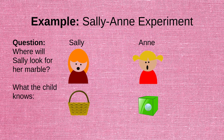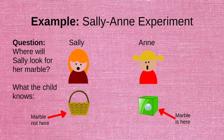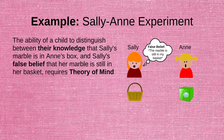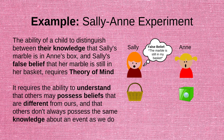Because the child saw the skit, they know that the marble is no longer in Sally's basket and that it is actually now in Ann's box. However, Sally, who doesn't know this, will have the false belief that her marble is still in her basket. The ability of the child to distinguish between their knowledge that the marble is in Ann's box and Sally's false belief that the marble is still in her basket requires a theory of mind. It requires the ability to understand that others may possess beliefs that are different from ours, and that others do not always possess the same knowledge about an event as we do.